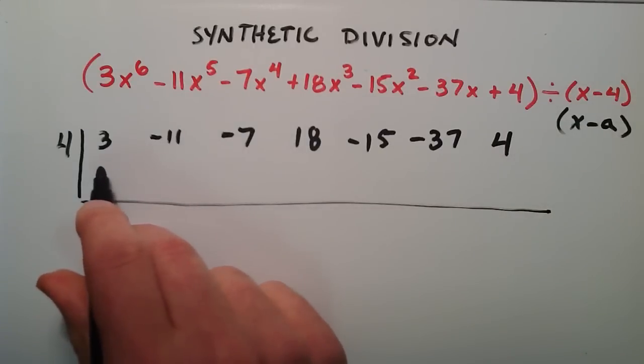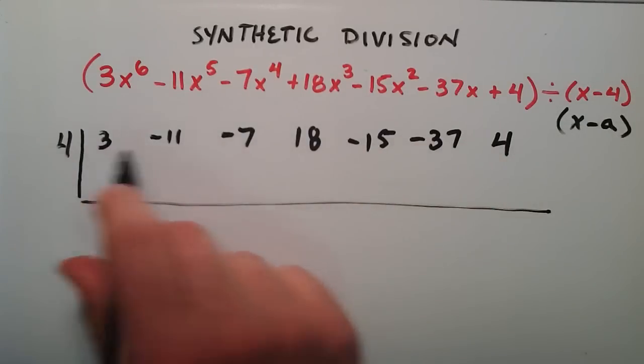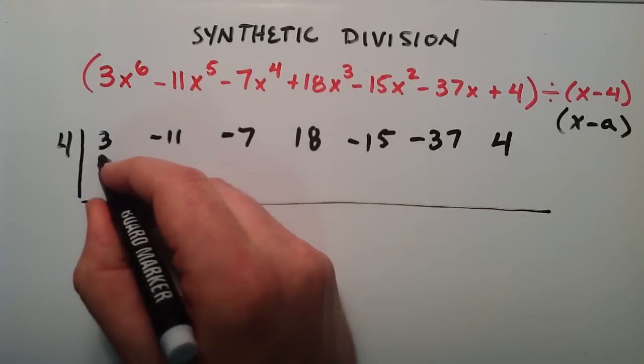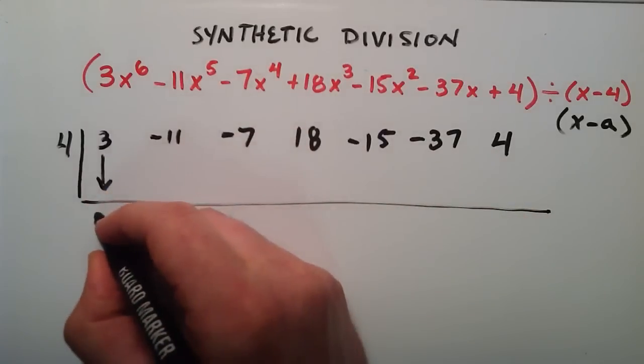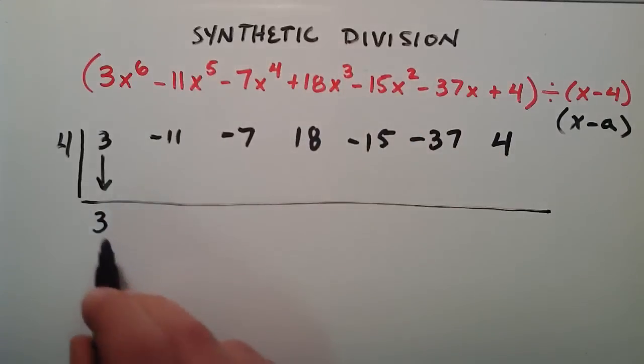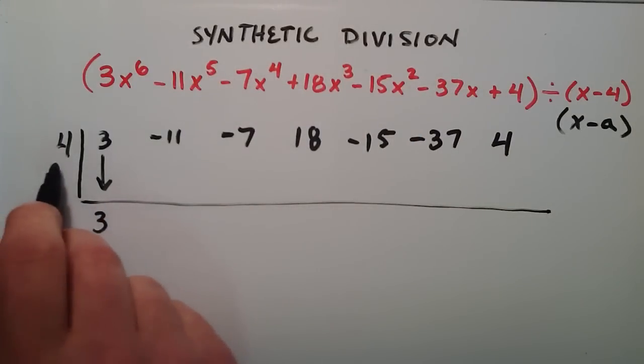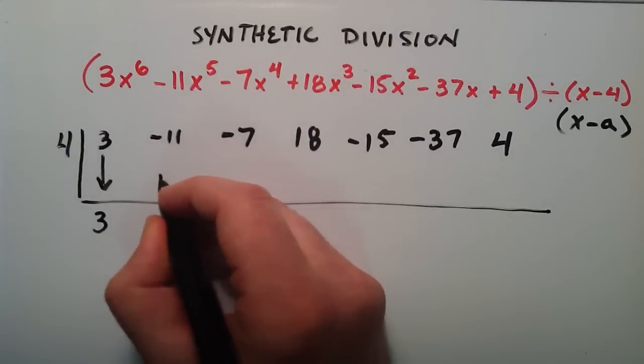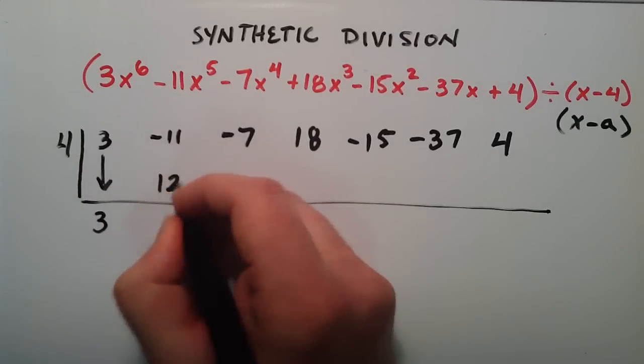And the first step with synthetic division after we've set up this little table type thing here, is we're going to take the first term, and we're just going to drop it down below this line here. And then we take whatever's down here, and we multiply it by our a term. So 3 times 4 is going to be 12. And we write that result in the next available space.